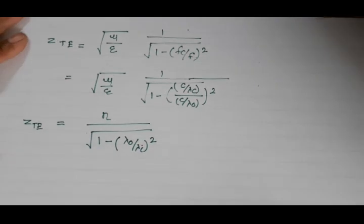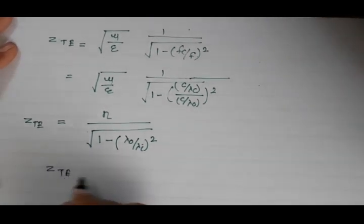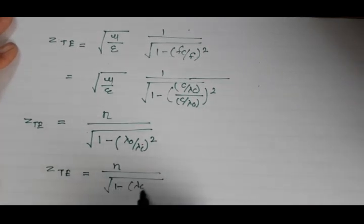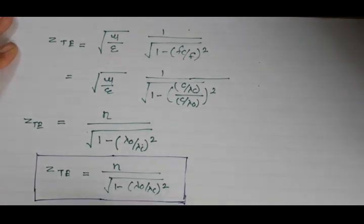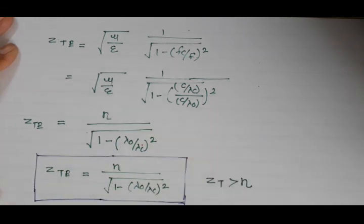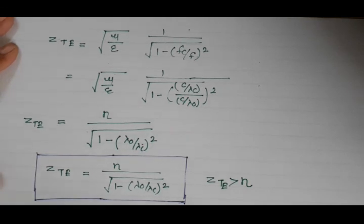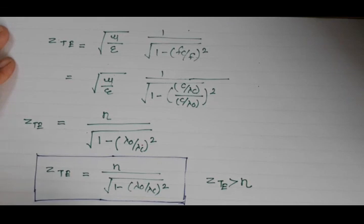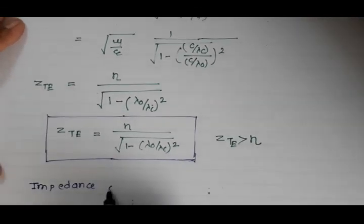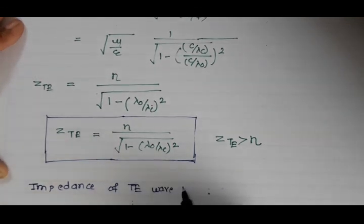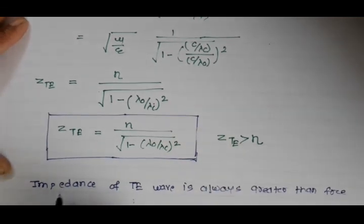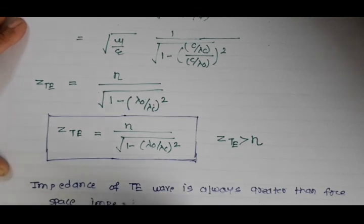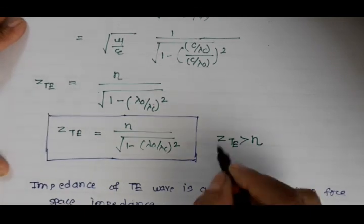So Z_TE = eta / sqrt(1 - (lambda_0/lambda_c)²). Since lambda_0 is always less than lambda_c, the denominator is less than 1, making Z_TE always greater than eta. This shows that the wave impedance of a TE wave is always greater than the free space impedance, in contrast to Z_TM which is always less than eta.